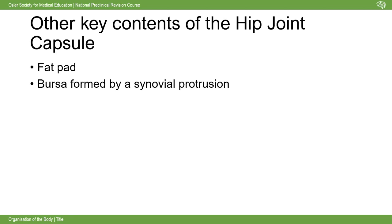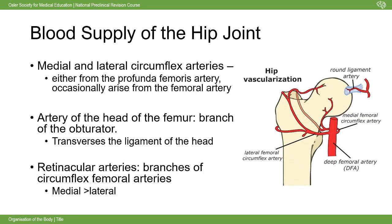For blood supply of the hip, remember two key points: first, the femoral head has its own blood supply and can undergo avascular necrosis if those arteries are disrupted - catastrophic given all body weight passes through it. Second, the hip joint has extensive vasculature overall because of its mobility, the many muscles involved, and its high oxygen demand.